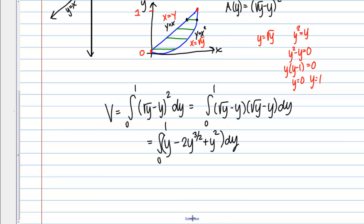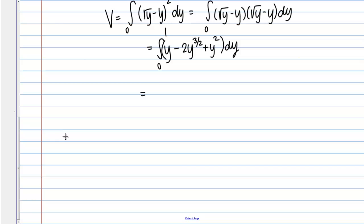And then I can go ahead and find the anti-derivative of that. And I get 1 half y squared minus 2. And then this is going to give me y to the 5 halves over 5 halves. So I can write that as 2 times 2 fifths y to the 5 halves.